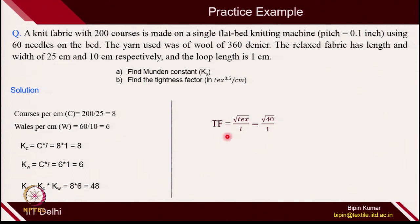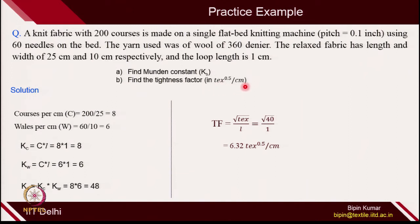For the tightness factor, the relation is √Tex / L. So √40 / 1 = 6.32 Tex^0.5 per cm. The tightness factor has the unit of square root of Tex per unit length. Here the length is expressed in centimeters, so the unit remains accordingly.